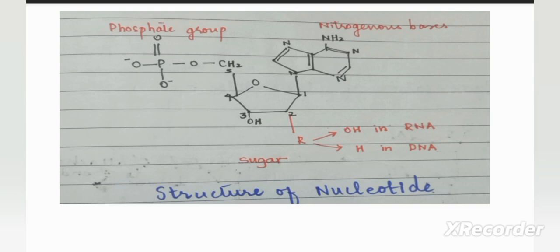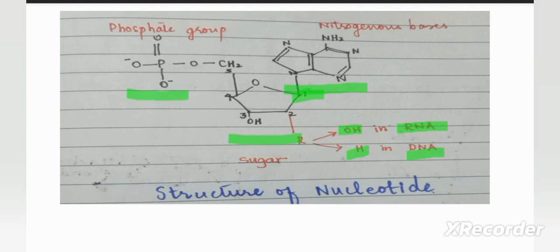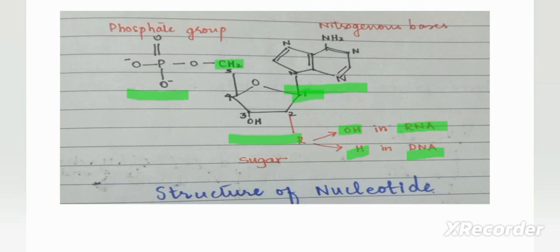Here you can see a complete structure of a nucleotide. Nucleotide is composed of a sugar — if a hydroxyl group is present at carbon number 2, then it is RNA; if hydrogen is present, then it is DNA. The nitrogenous base is linked with carbon number 1 of the ribose sugar, and the phosphate group is linked with carbon 5 of the sugar. These three components together make a nucleotide.